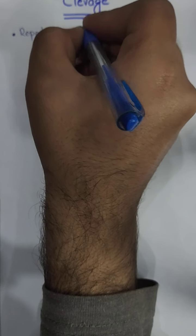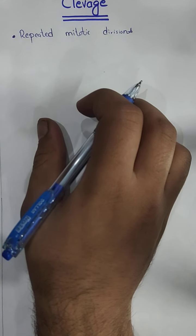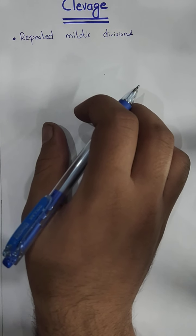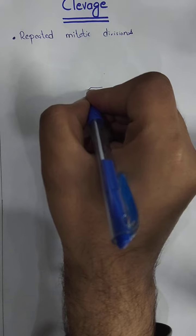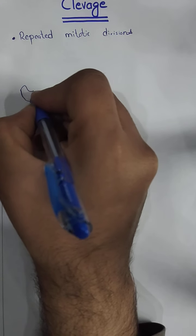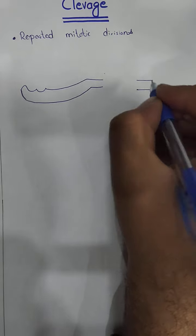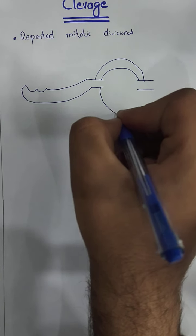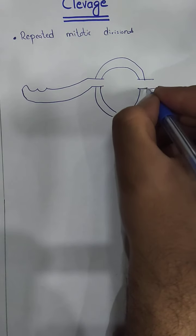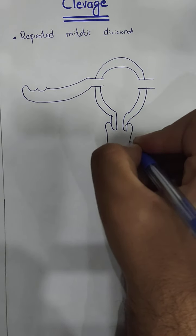These repeated mitotic divisions occur after fertilization. Before we discuss cleavage, we will draw the ovary and fallopian tubes, because during the discussion of cleavage we will need them. This is the fallopian tube, this is the uterine body, and this part connects with the vagina.